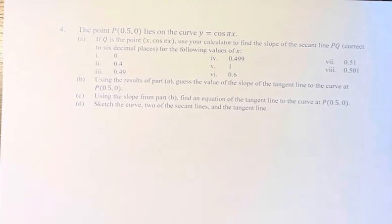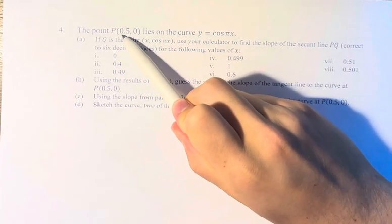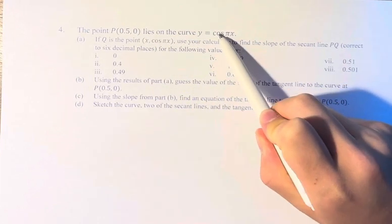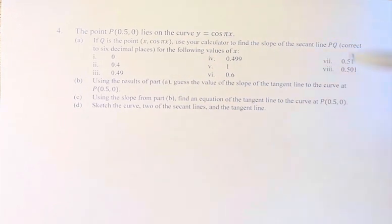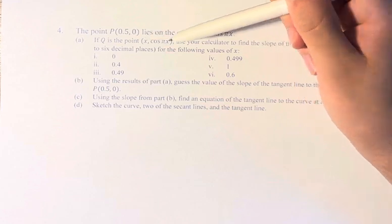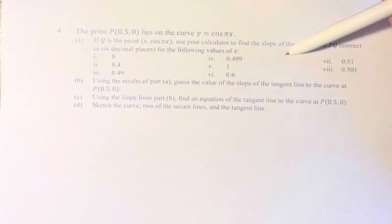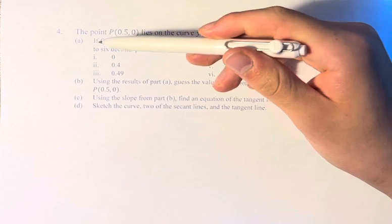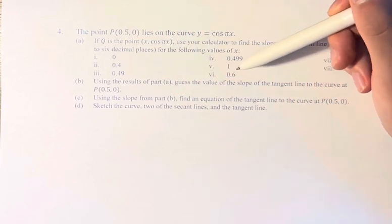Hello, and welcome back to another video. In this problem, we're told the point (0.5, 0) lies on the curve y equals cosine of pi x. We're asked if q is the point (x, cosine pi x), use your calculator to find the slope of the secant line pq, correct to six decimal places for the following values of x.